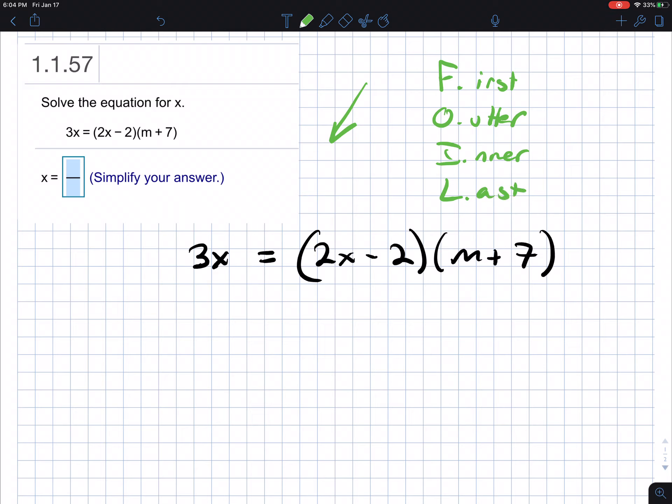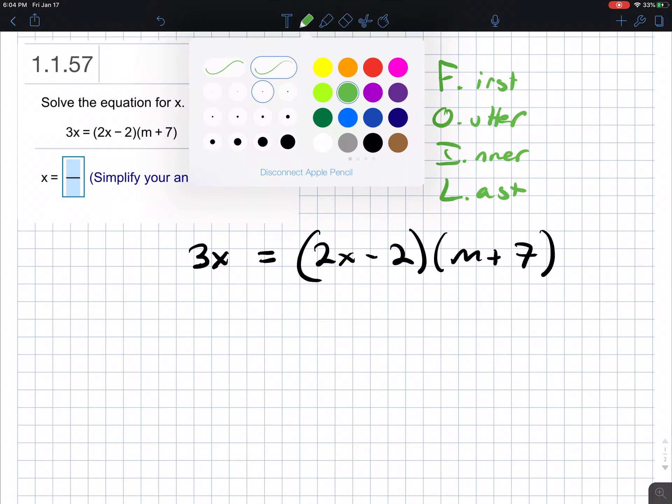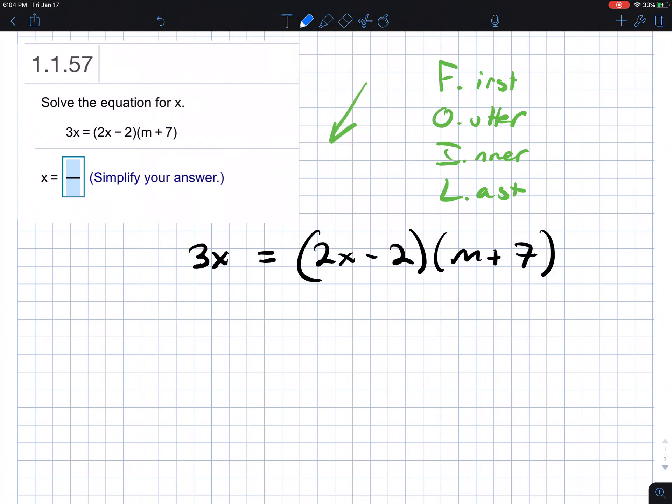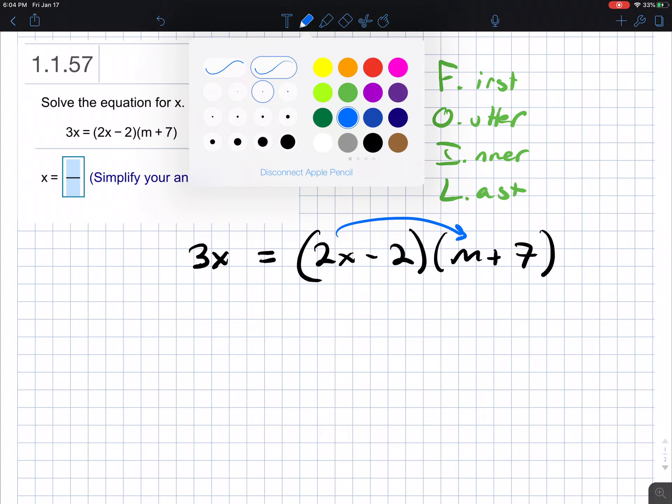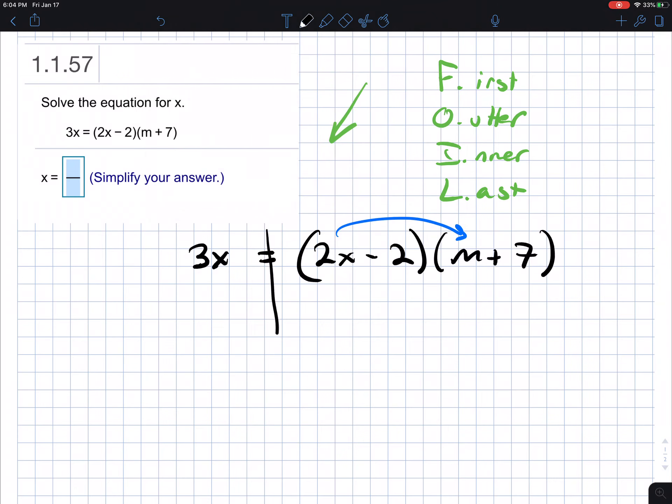So we're going to use the technique of FOIL. So if we FOIL this, we're going to say first times the first. So the 3x is going to come down. 2x times m is just going to be 2xm.